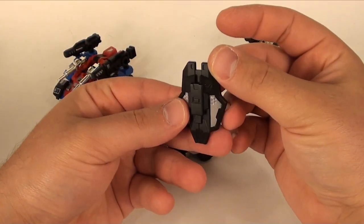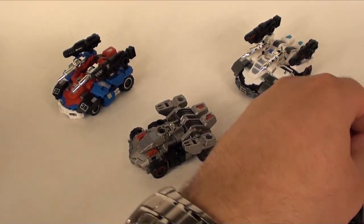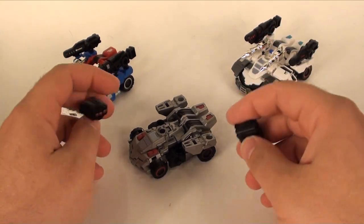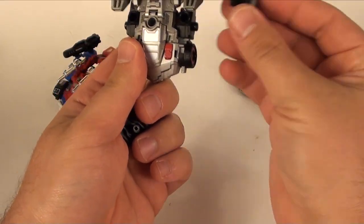We have a very Optimus Prime looking gun. We got two missile pods and these were actually attached to Blue Streak or Silver Streak when I got them, so you can go ahead and arm him with those if you want.